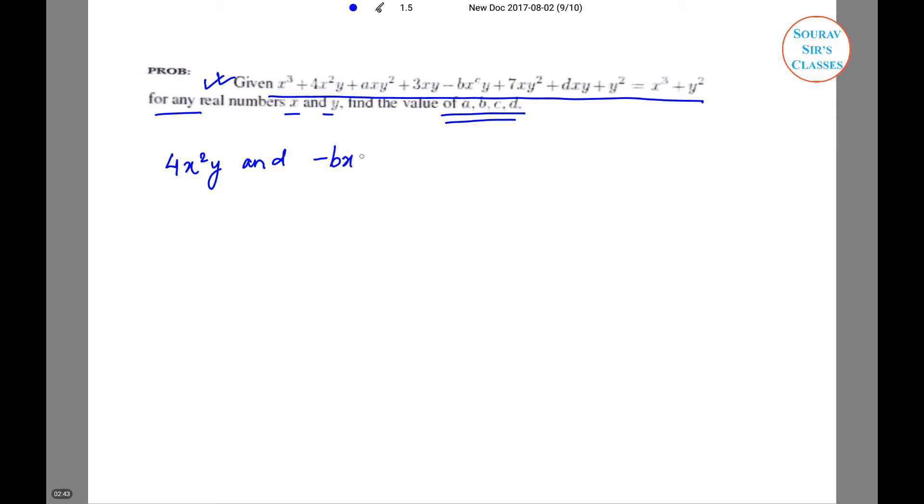First we will try to figure out the values of b and c, and then we will comment on the values of a and d. So these two must be like terms, and their sum will be 0, so we can say that b is equal to 4 and c is equal to 2.